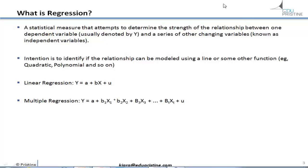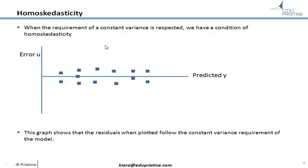Moving to homoscedasticity: when the error — the difference between the error u on the vertical axis and the predicted value on the horizontal axis — shows constant variance with no pattern other than hovering around the predicted value, that is actually an assumption for linear regression. We want to make sure that assumption is validated and respected, and if we do, we get a homoscedastic system. That's our goal.